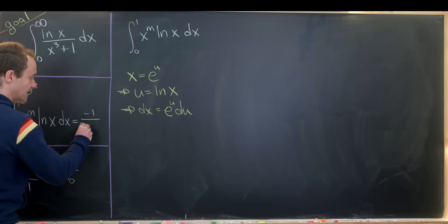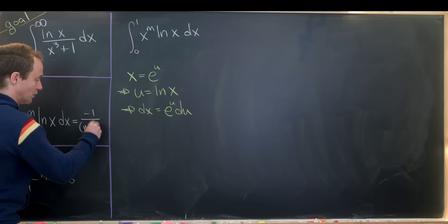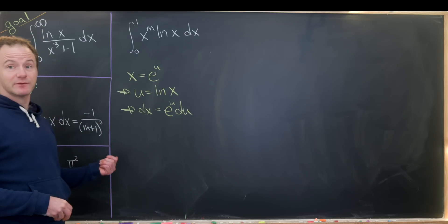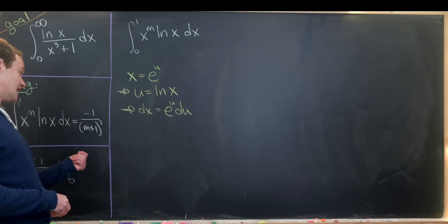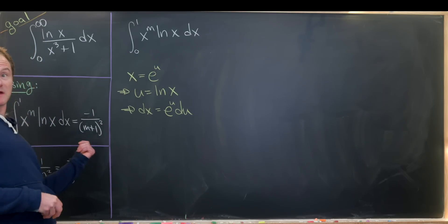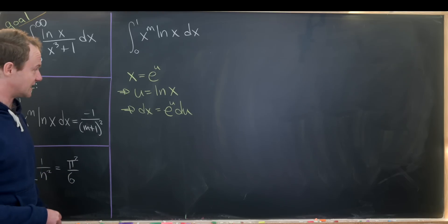I just realized this should in fact be minus 1 over m plus 1 squared — that was a close one. Maybe some of you even made comments about this mistake, but I fixed it just in time.